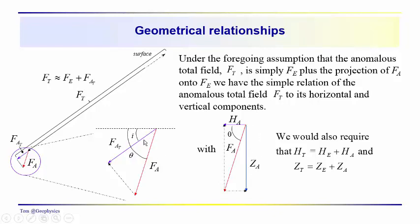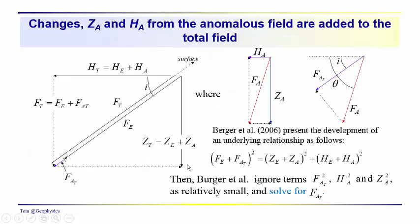Now let's see how we work that out when the only information we have is the scalar difference between F sub T and F sub E. We're assuming that we have vector F sub T, which includes the anomalous field — the perturbation in the Earth's main field intensity. The projection of that field onto the direction of the Earth's main magnetic field should be composed of a horizontal component H sub E plus H sub A, and in the case of the vertical component, Z sub E plus Z sub A.